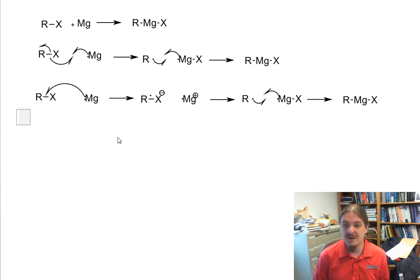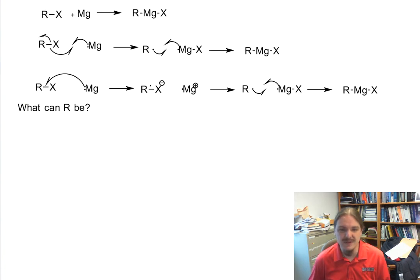Before I move on into the series of videos about applying the Grignard reagent to doing things, I want to just talk very briefly about what can R be and what can X be, and then show a couple of specific examples.